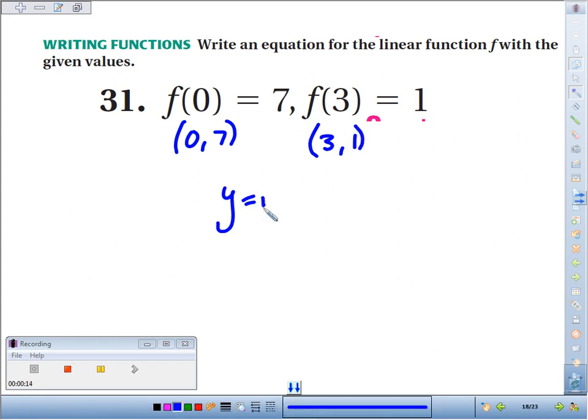So if we're going to write a slope-intercept equation, we need to know the slope and the y-intercept. Well, the y-intercept we can pick out really quick. It's the y value when x is 0. So we've got 7.